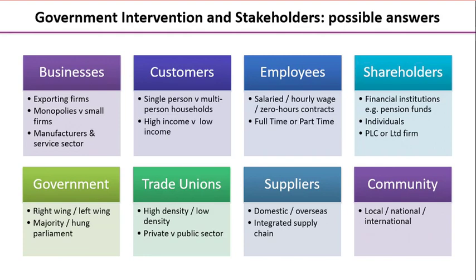Hopefully you can see some suggested answers on screen now. It's absolutely fine if you've come up with your own — it just means you have more ideas to consider. Moving on to customers: you could look at the difference between single-person versus multi-person households, how income and spending choices might differ, and high-income versus low-income households — thinking about income elasticity of demand and its bearing on different policies. For employees: those on salaried, hourly wage, or zero-hours contracts, and full-timers versus part-timers.